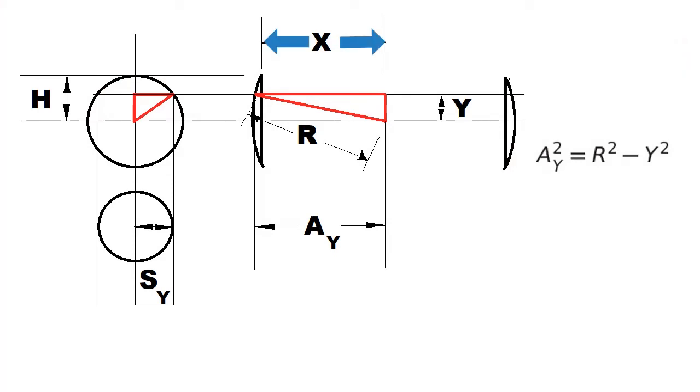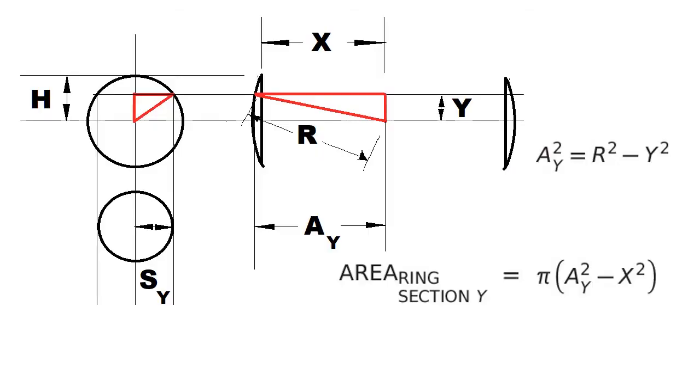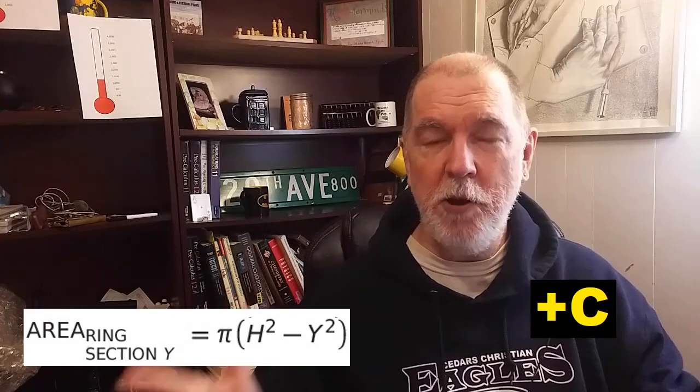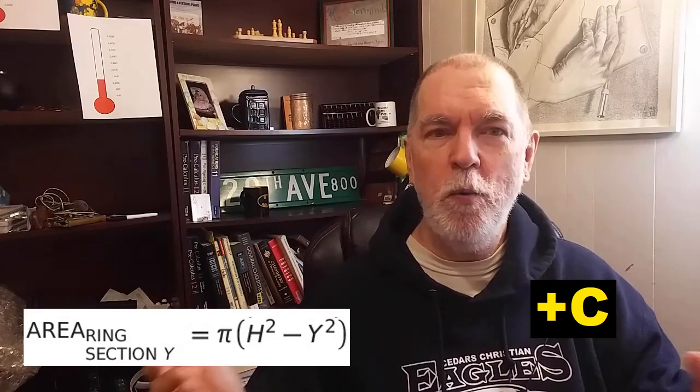We now have a more general expression for the area of the annulus at position y. Substitute our previous expression for a into this expression and we get something new. But remember, R squared minus X squared is h squared. So there we have the area of our annulus in terms of h and y.